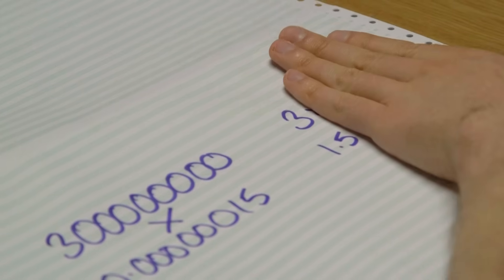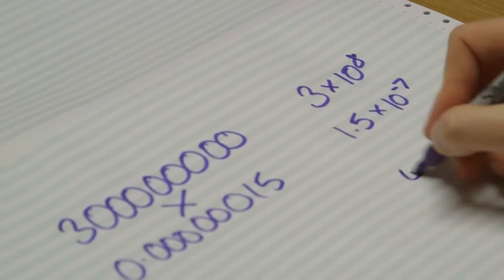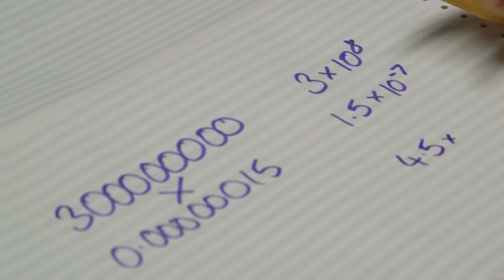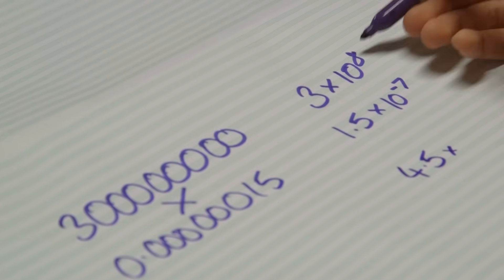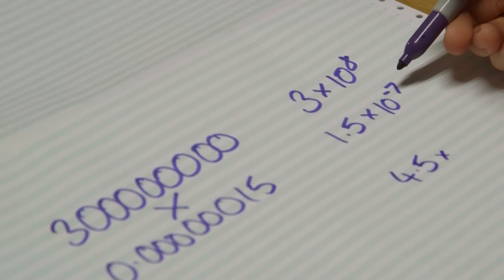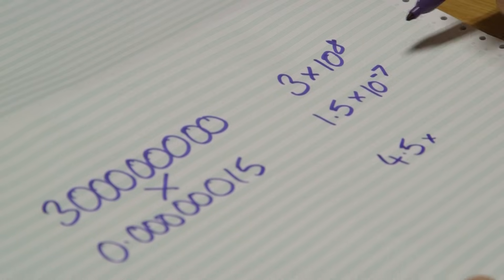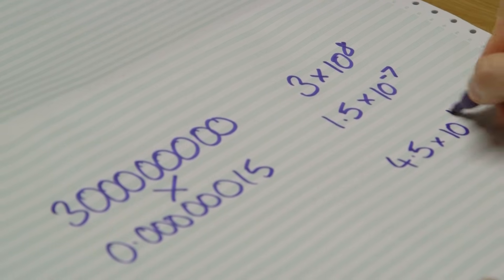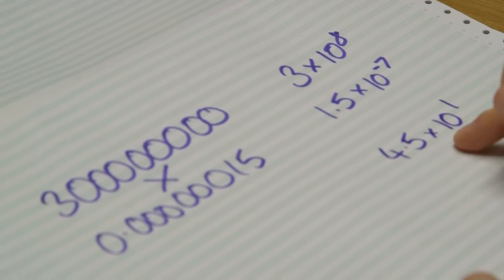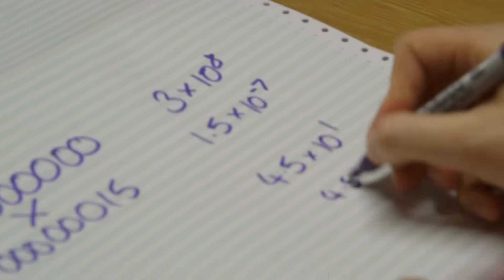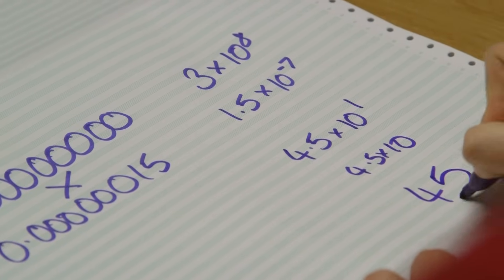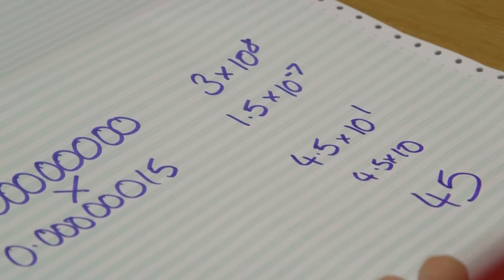You don't need to do anything particularly complicated to multiply these two together. All you have to do is multiply the significands — 3 times 1.5 is 4.5 — and then add the exponents: 8 plus minus 7 equals 1. So we're looking for 4.5 times 10 to the 1, or 4.5 times 10, which is 45. Brilliant. That's much easier than trying to actually handle large numbers.